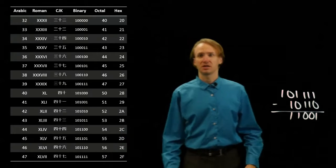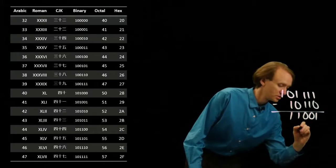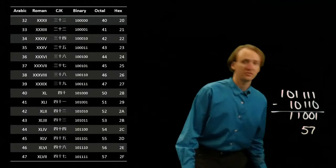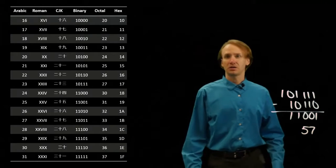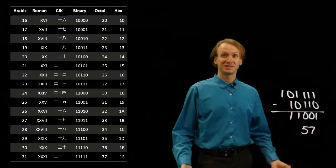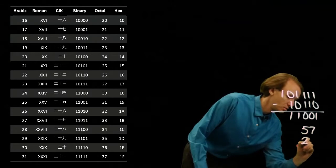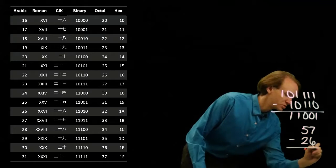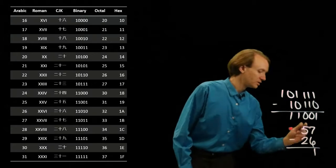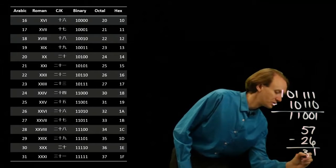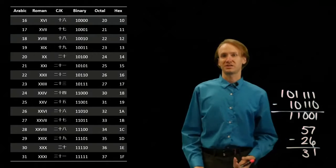If I try this again in octal, I'd start with 57 for my decimal 47, and I'll subtract off 26. So this one won't be terribly interesting. 7 minus 6 is 1, 5 minus 2 is 3, and next to 25 I see 31.